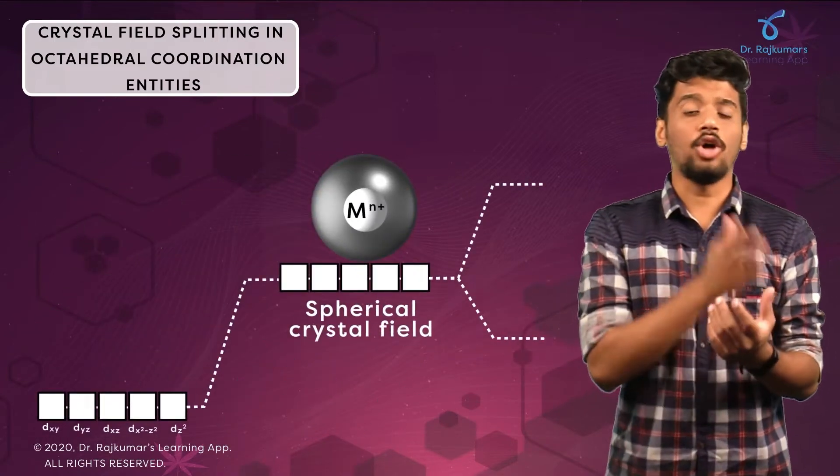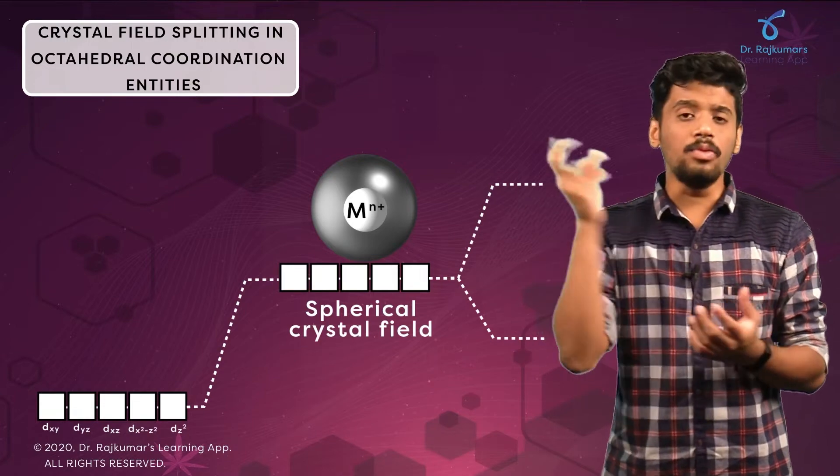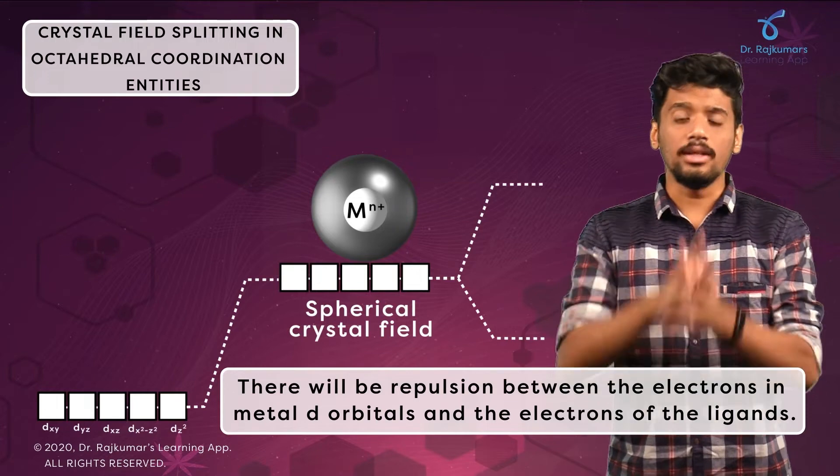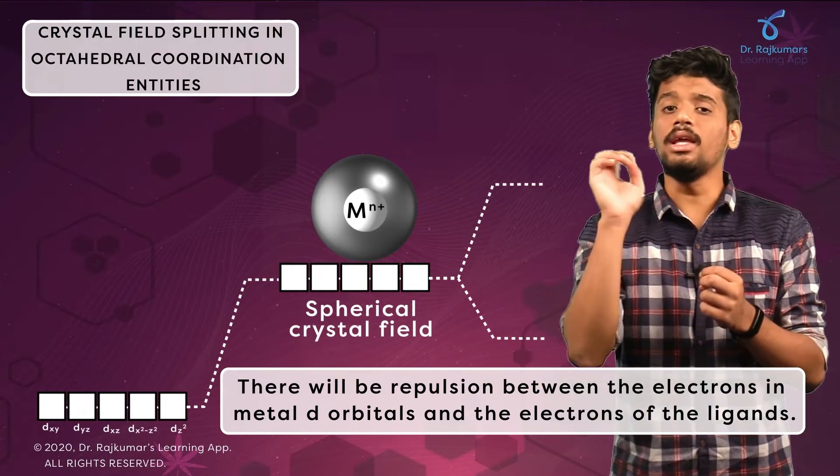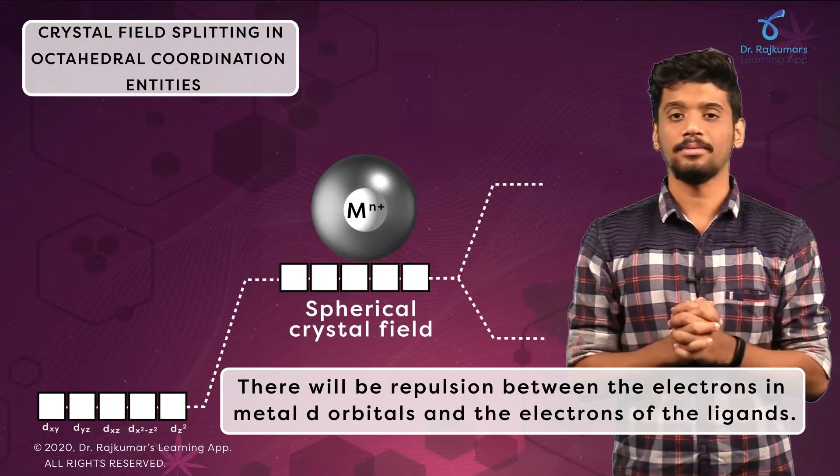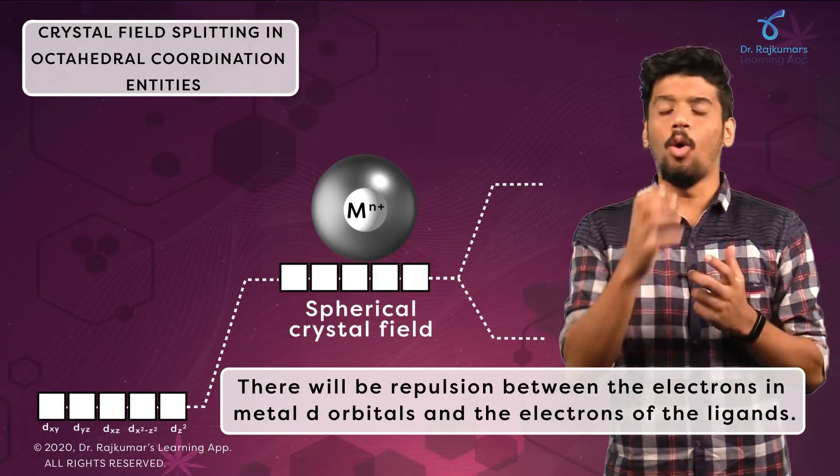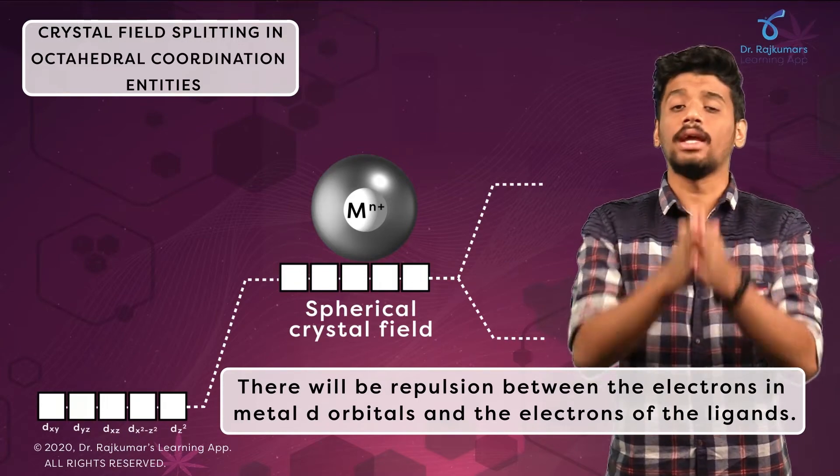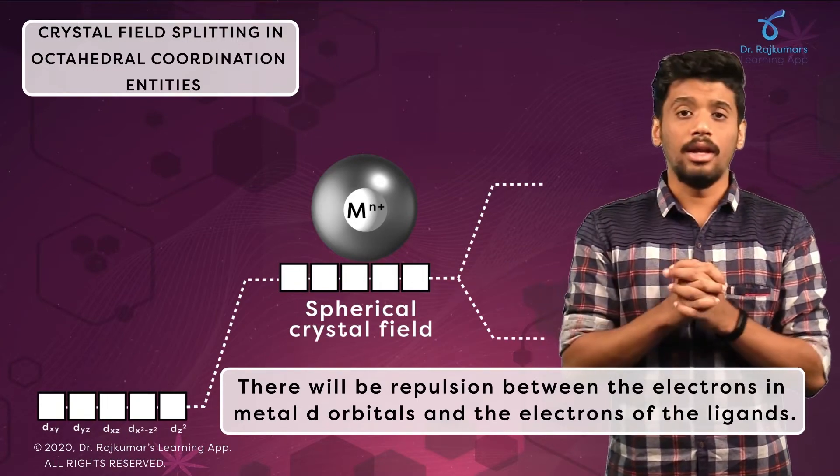The electron density of the ligands on the metal ion results in repulsion between the electrons in the d orbital of the metal ion and the electrons of the ligands. Such repulsion is more when the metal d orbital is directed towards the ligand than when it is away from the ligand.